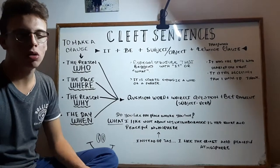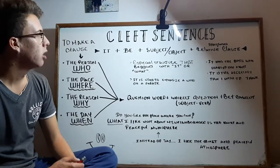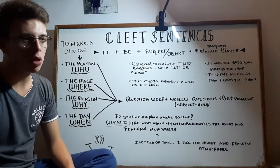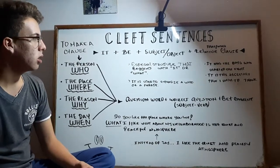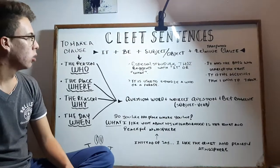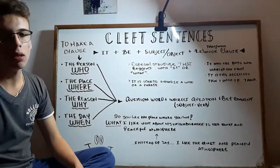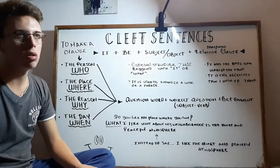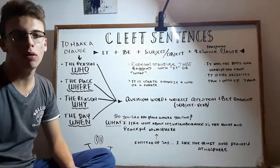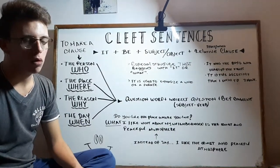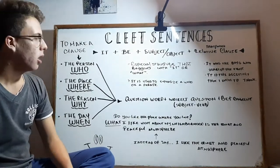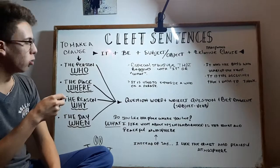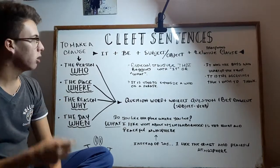I'm Santiago Roa and I'm going to teach you the cleft sentence. A cleft sentence is a special structure that uses 'it' or 'what,' and it is used to emphasize and select a special part of a sentence.